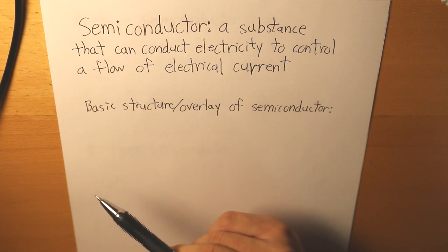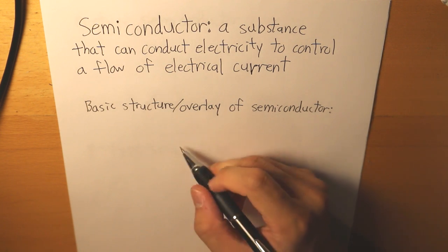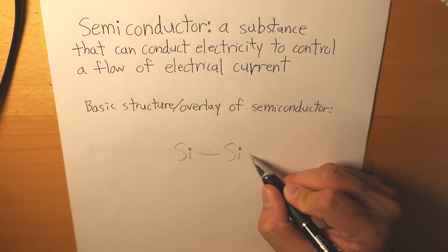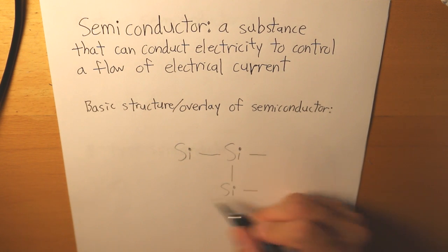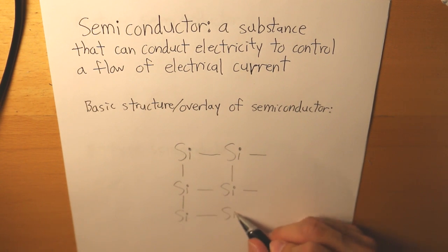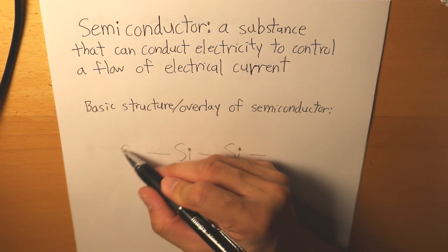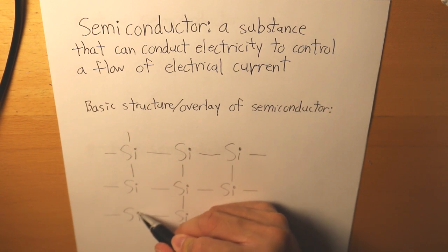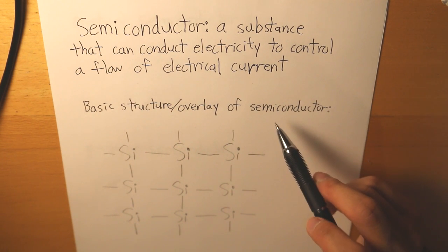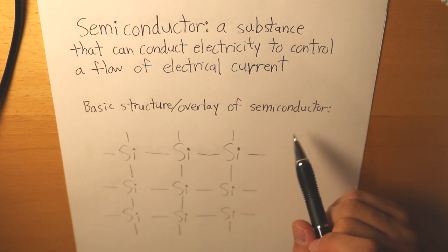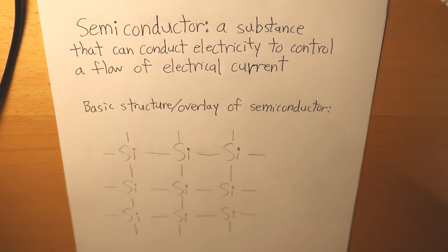In today's society, most — if not all — of our semiconductors are silicon. So it basically looks like this: we have these silicon atoms that are all bonded together. This is what we call an intrinsic semiconductor, where there are no external factors affecting these bonds.